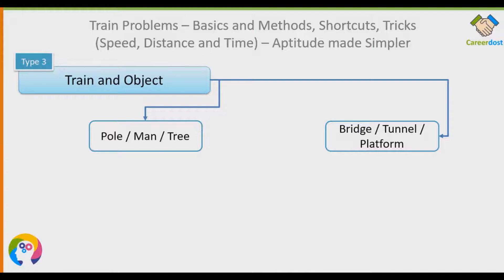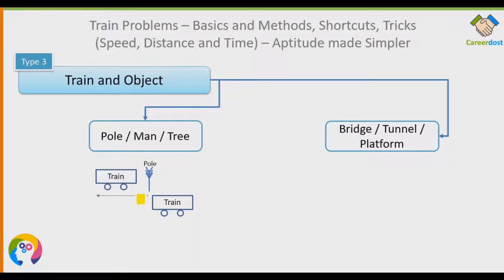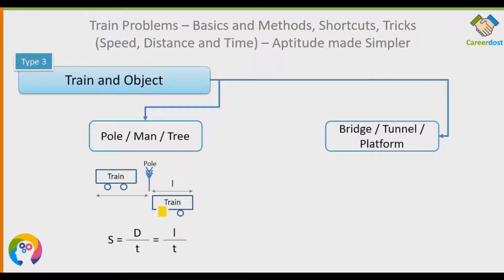When a train is crossing a pole, man, or tree, the distance covered by the train equals the length of the train. When the back of the train passes the pole, we say it has completely crossed. So the formula becomes S = L/T, where L is the length of the train.